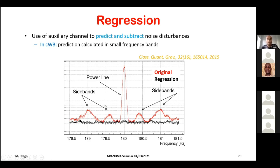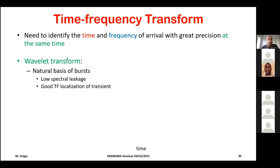In CWB, the line filter uses regression with auxiliary channels: you predict the contribution of an auxiliary channel to the gravitational wave channel and subtract the disturbance. This is shown for a power line with sidebands — using the auxiliary channel, you clean the power line from red to black. In principle, since you are only using information from non-gravitational wave channels, a real gravitational wave signal should survive this cleaning.